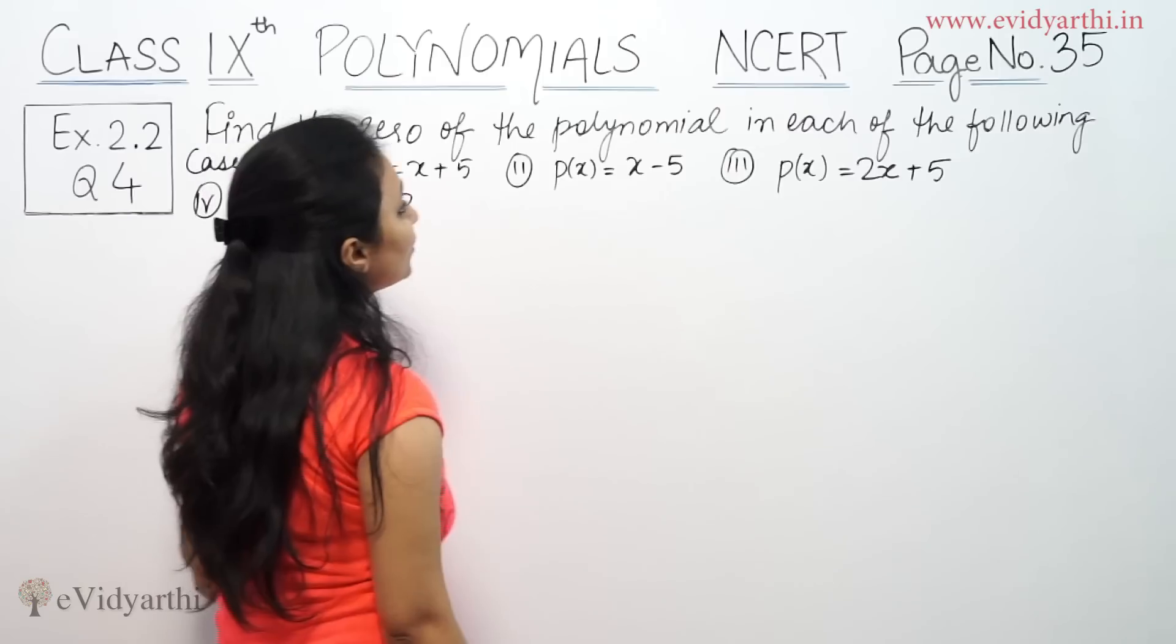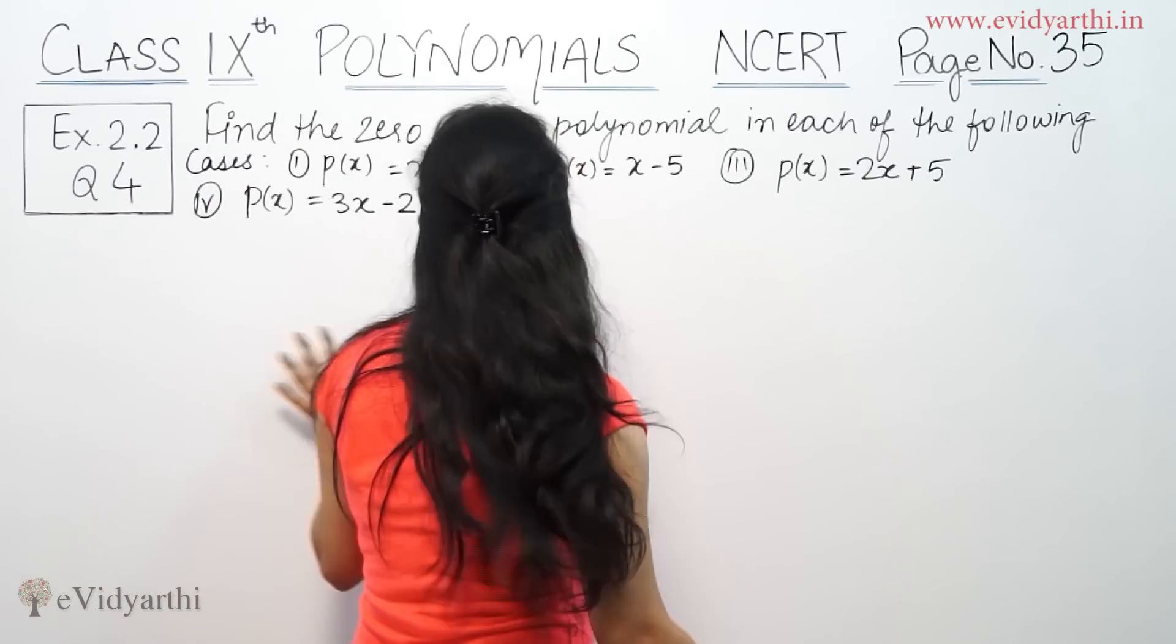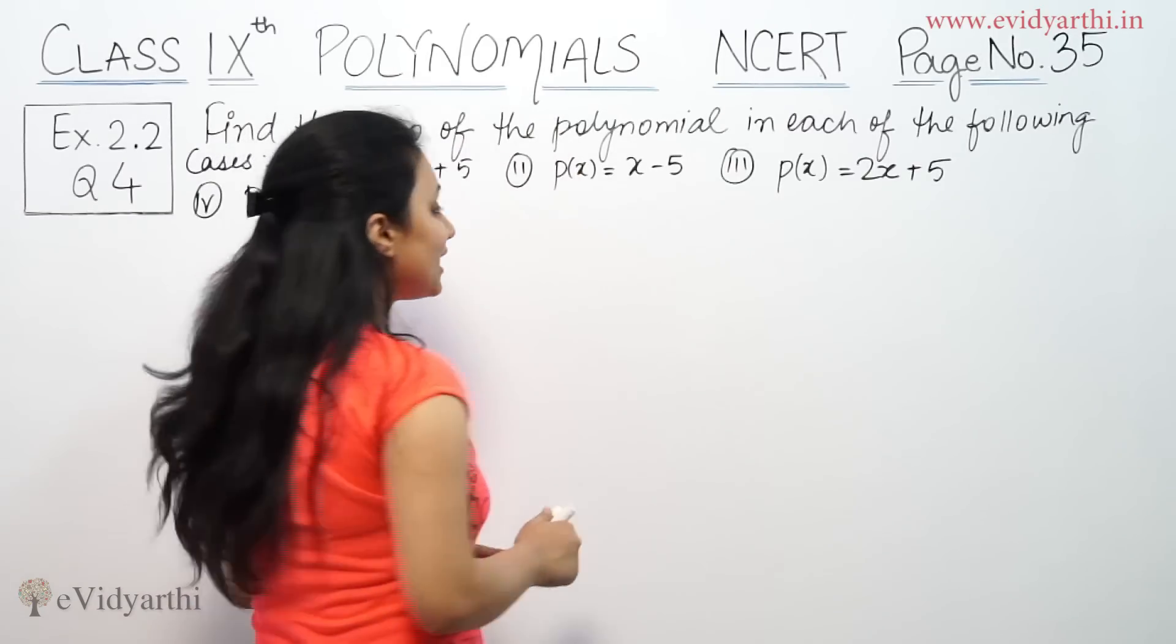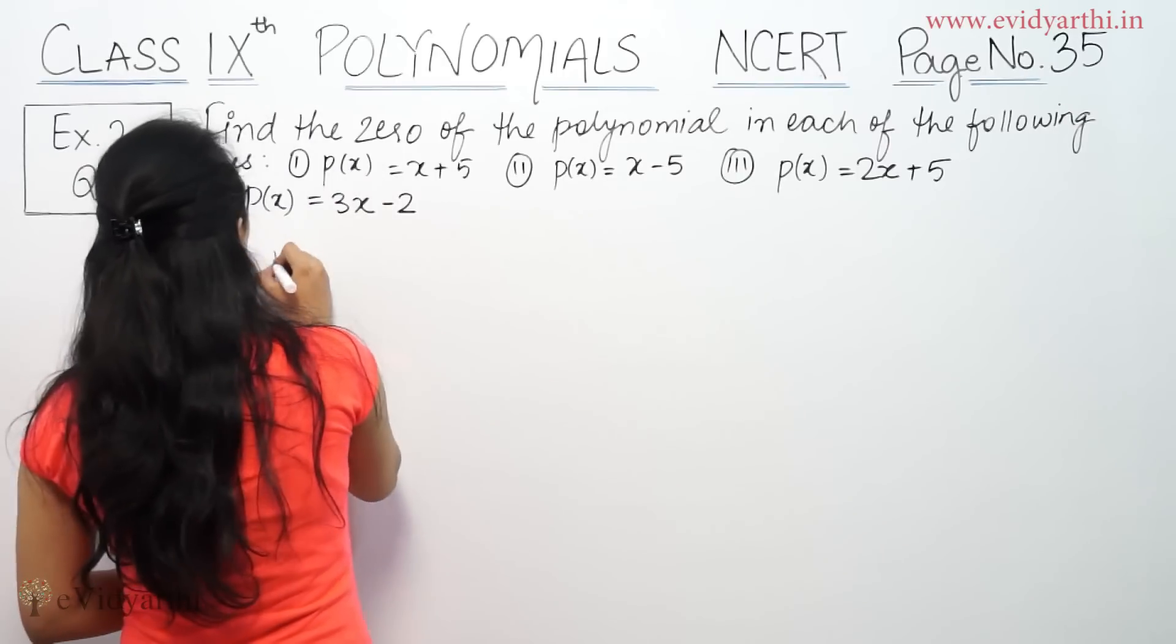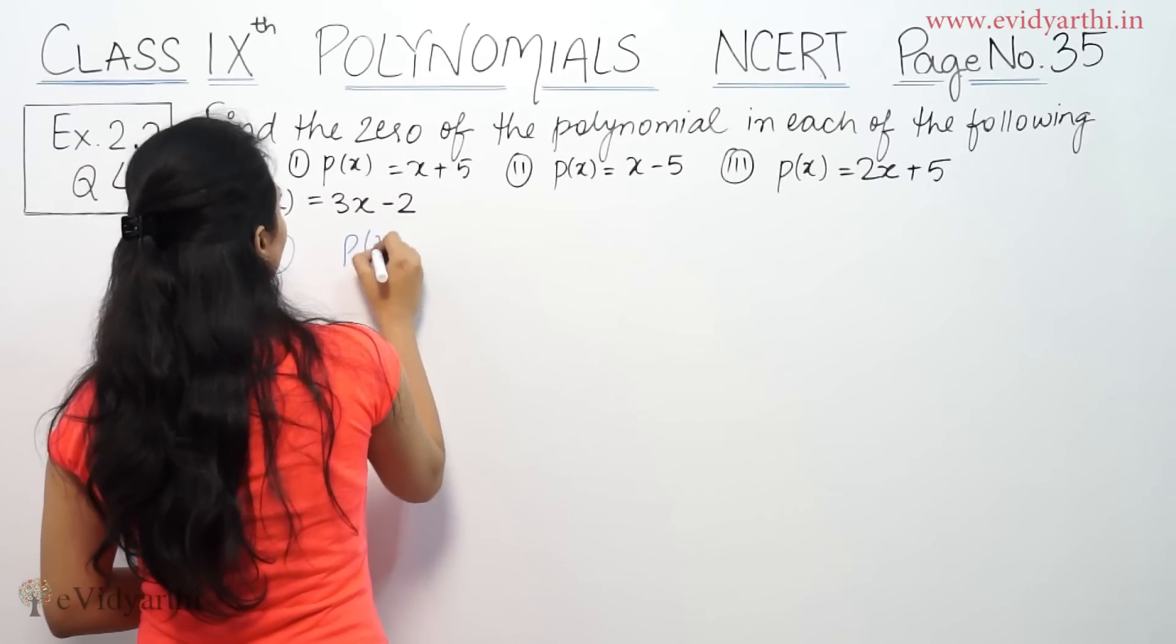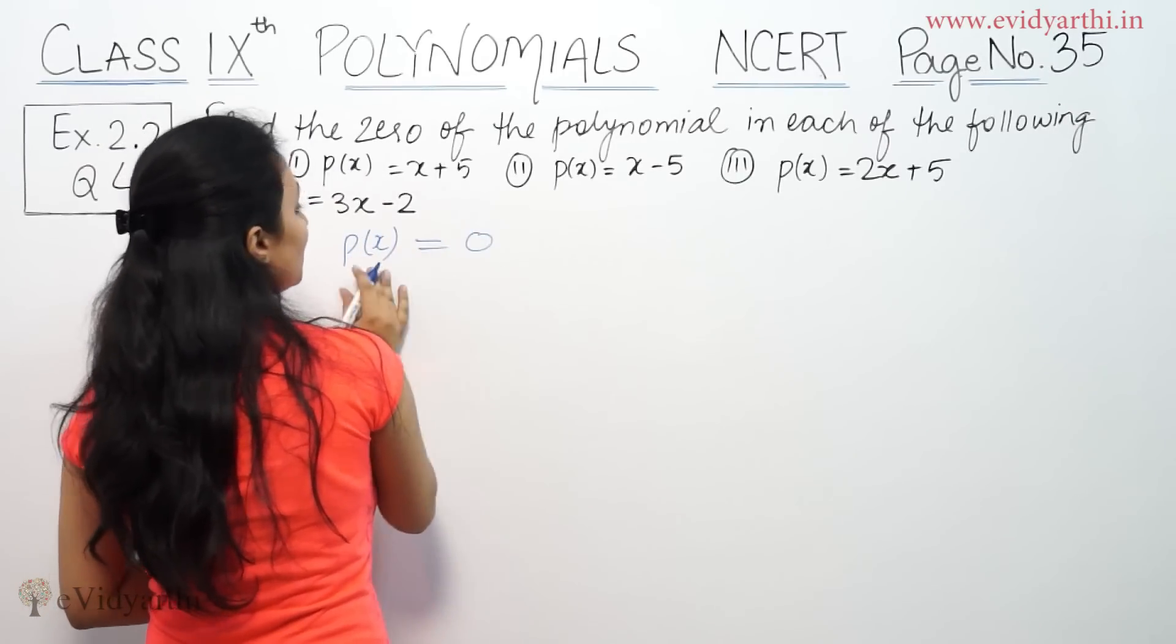It says find the zero of the polynomial in each of the following. To find the zero, we equate the polynomial to zero. This should be equal to zero.